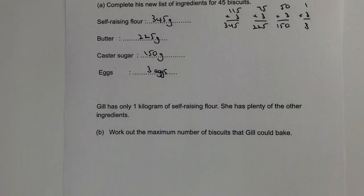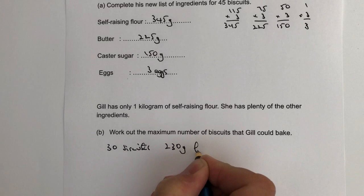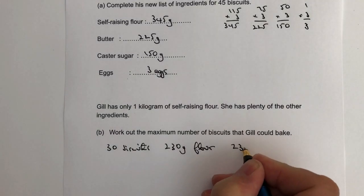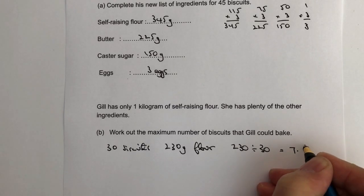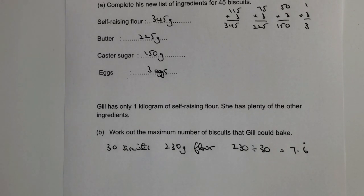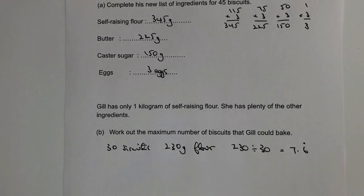After thinking about this, the most straightforward way is to work out how much flour you need per biscuit. That's 230 divided by 30, which comes out as 7.6 recurring. These sorts of questions are probably high-level non-calculator or calculator questions. The 0.6 recurring basically means 0.666..., so this is seven and two thirds of a gram of flour per biscuit.